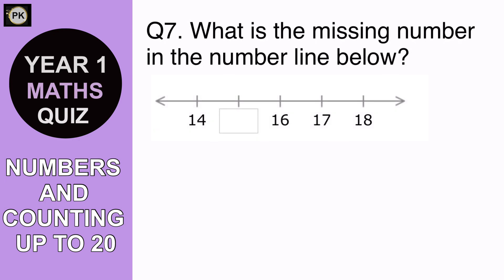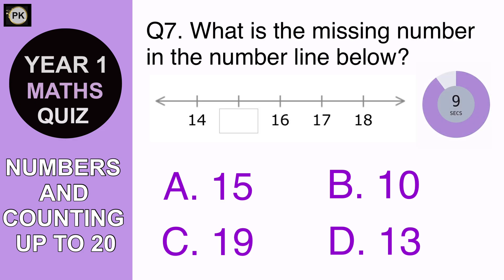What is the missing number in the number line below? A. 15, B. 10, C. 19 or D. 13? And the answer is A. 15.